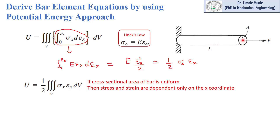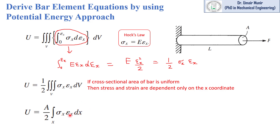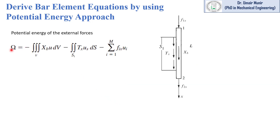The area of the bar element is uniform throughout, and stress and strain are only changing in the x direction — not in the y and z directions. So we may write the equation of strain energy separating the area from the delta x coordinate. We now only need to integrate this equation with respect to x. This equation represents the area under the stress-strain curve.